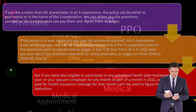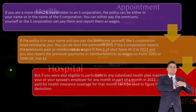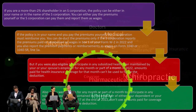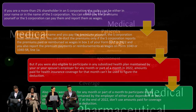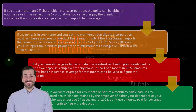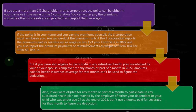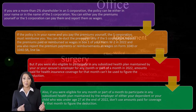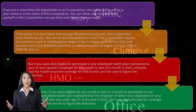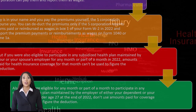If you were eligible to participate in any subsidized health plan maintained by your employer or your spouse's employer for any month or part of a month in 2022, amounts paid for health insurance coverage for that month can't be used to figure the deduction. Similarly, if you were eligible to participate in a subsidized plan maintained by the employer of your dependent or a child under age 27 at the end of 2022, don't use amounts paid for that month to figure the deduction.